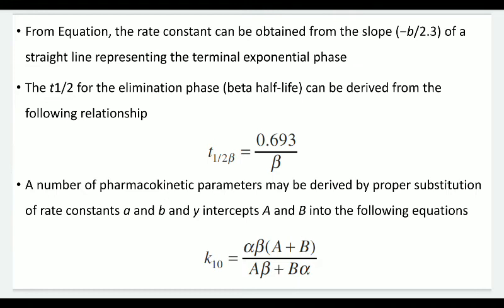A number of pharmacokinetic parameters may be derived by proper substitution of rate constants α and β, where A is the rate constant for the distribution phase and B is the rate constant for the elimination phase, and intercepts A and B are substituted into the relevant equations. These equations are important to remember for examination purposes.